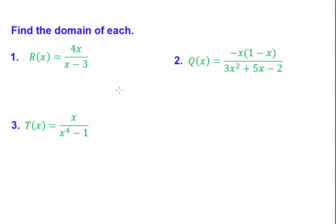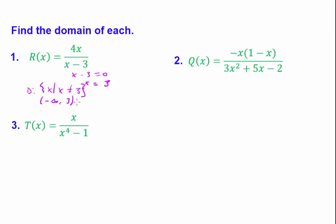For the first set of problems, we will find the domain of each. Remember, the denominator, or q of x, cannot be equal to 0. So we set the denominator equal to 0 and find the restriction. We set x minus 3 equal to 0, solve, and get x equals positive 3. In set builder notation, the domain is x such that x cannot equal 3. In interval notation, it's negative infinity to 3, not including 3, union 3 to infinity.